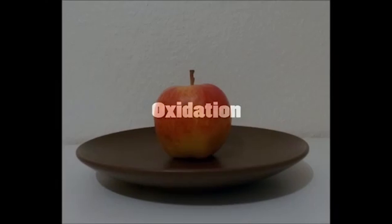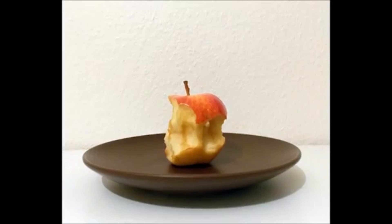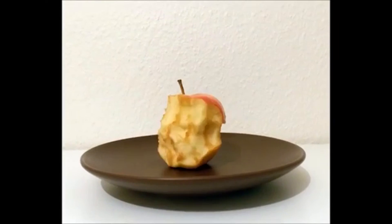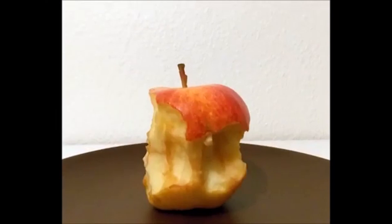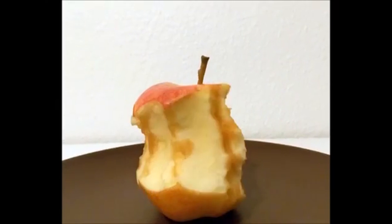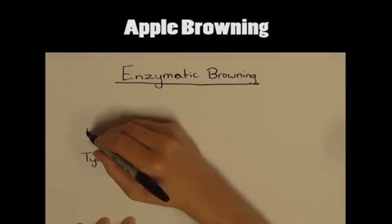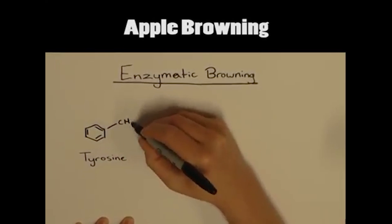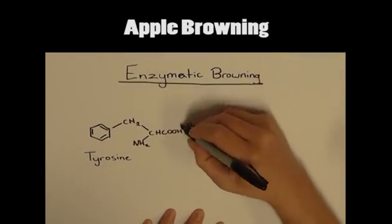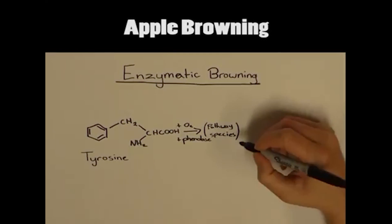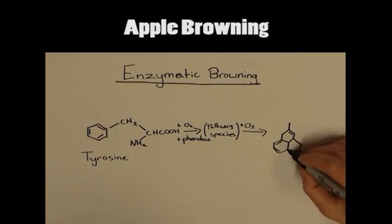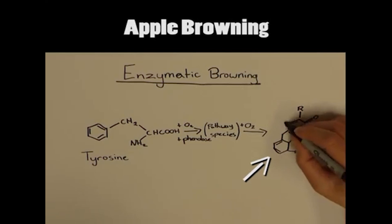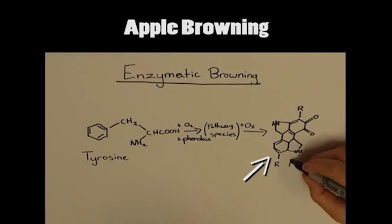Oxidation refers to the redox reaction that occurs in food. When food is exposed to oxygen, many compounds lose electrons and bond to oxygen as it is highly electronegative. Oxidation of food is a destructive process, causing undesirable colour, flavour change and loss in nutritional value. For example, when an apple is cut, phenolase — a naturally occurring enzyme in the cell — acts as a catalyst for the oxidation of the amino acid tyrosine. The final product of this enzymatic reaction is melanin, which has a dark brown colour and results in what we see as apple browning.